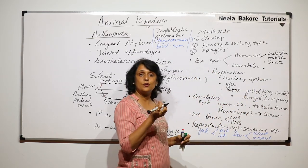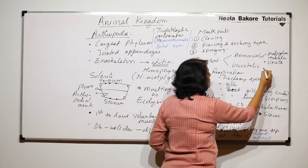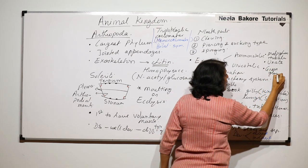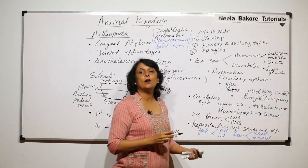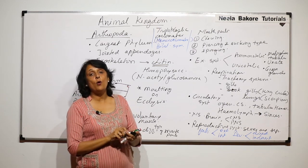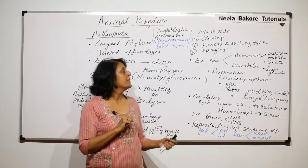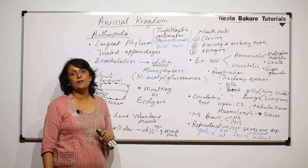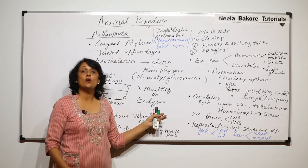In prawns there is another excretory structure called the green glands, also known as antennal glands because their openings are located just beneath the antennae. These are the general features of Arthropoda.